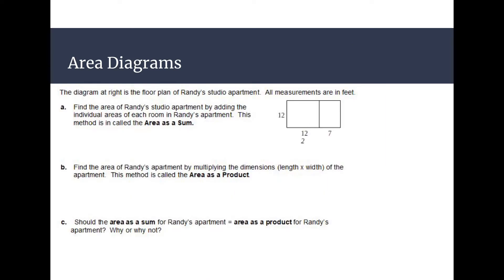All right, so we're going to do a little bit more work here with Randy's apartment. And we're going to find the area of Randy's apartment. So question A here says find the area of Randy's studio apartment by adding the individual areas of each room. This method is called area as a sum.